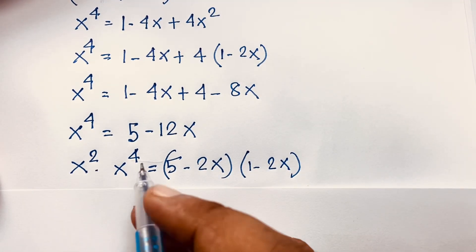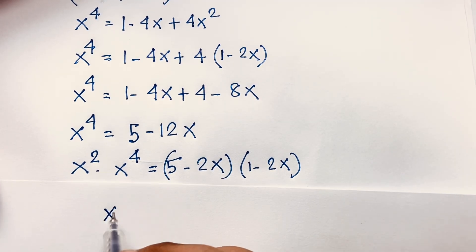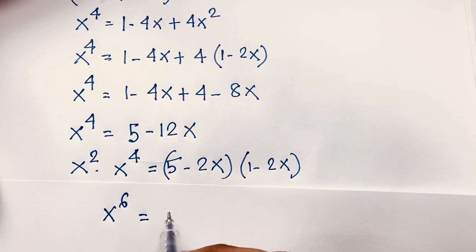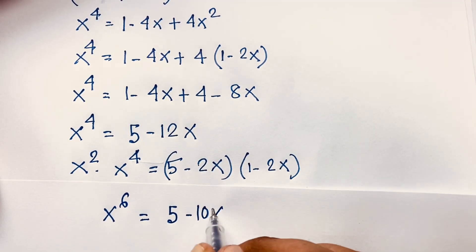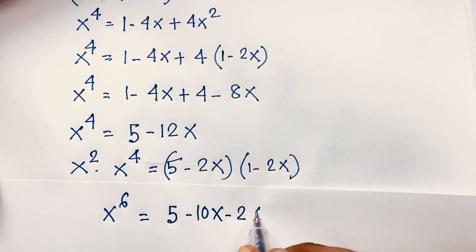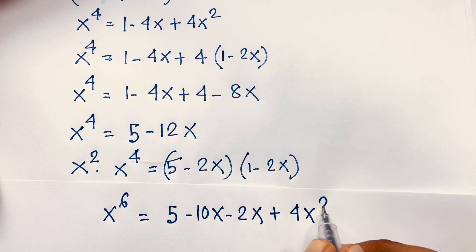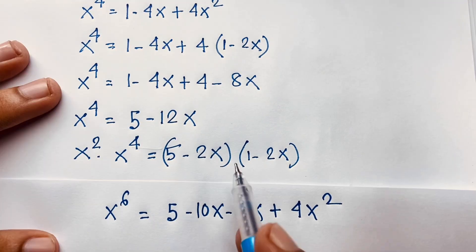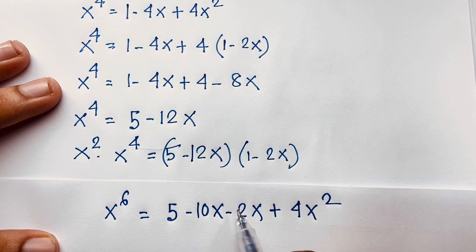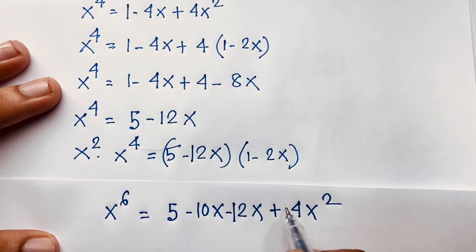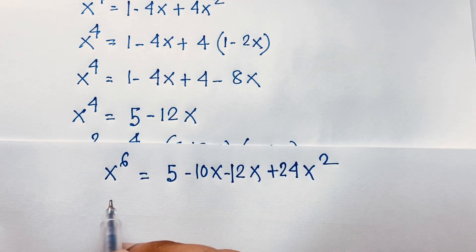x² times x^4 equals x^6. Now expanding: 5 times 1 equals 5, 5 times 2x equals 10x, then 12x times 1 equals 12x, and 12x times 2x equals 24x².